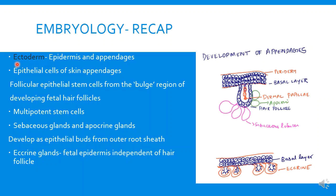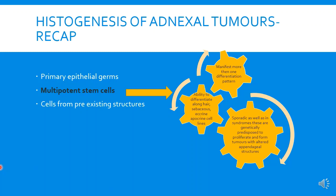The appendageal structures arise from the ectoderm, and follicular epithelial stem cells from the bulge region of the developing fetal hair follicle give rise to the hair follicle, hair bulb, and shaft — all developing from multipotent stem cells. Adnexal tumors develop from multipotent stem cells that have the potential to differentiate into different types of tumors along the line of hair follicle differentiation, sebaceous differentiation, eccrine, and apocrine cell lines. Sporadic as well as syndromic forms are genetically predisposed to proliferate and form tumors with altered appendageal structures, which is why they may manifest more than one differentiation pattern.